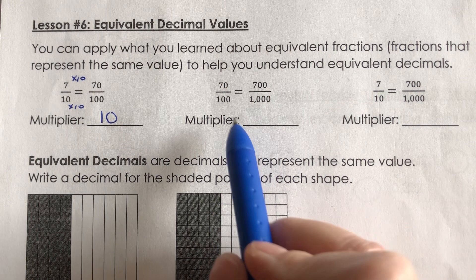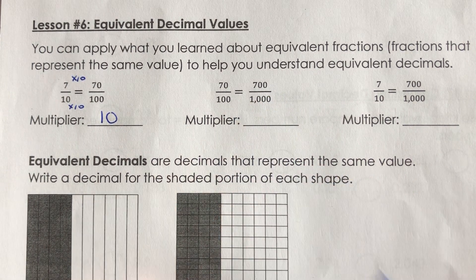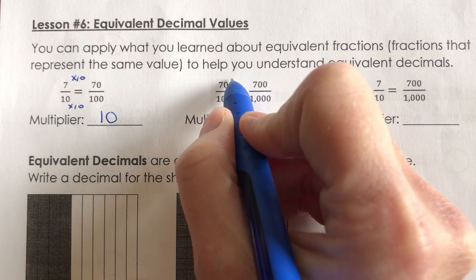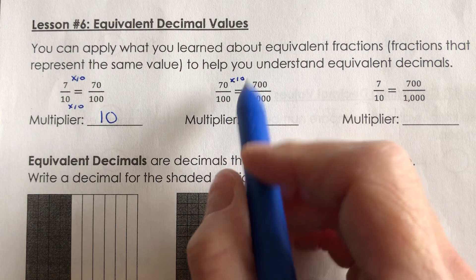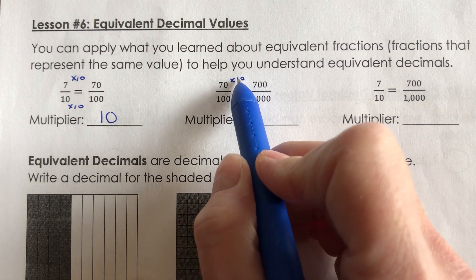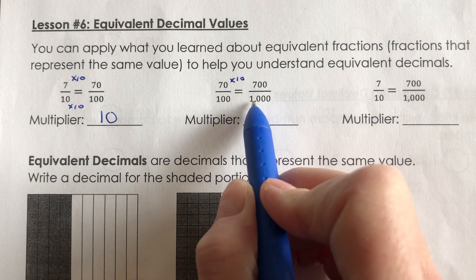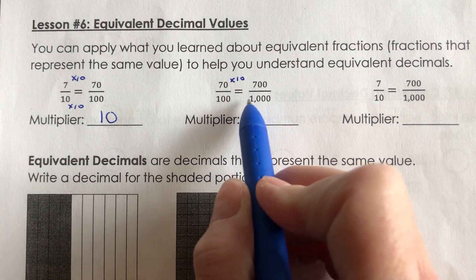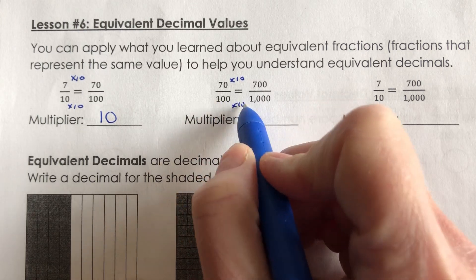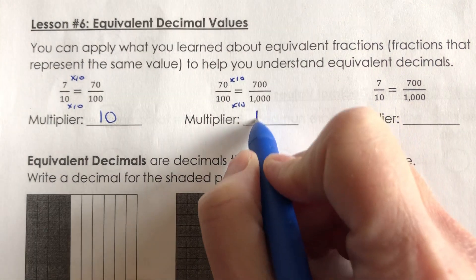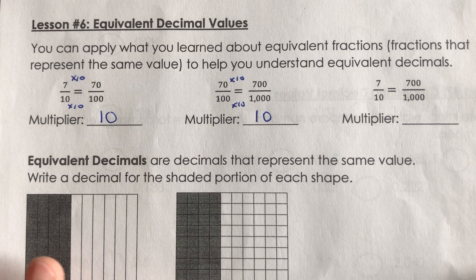For the second one, I have 70 over 100, which equals 700 over 1,000. If I multiply 70 by 10, I get 700. That pattern is 7 times 1 is 7 with two zeros. And we have 1, 2, 3 zeros in the denominator. So the multiplier here would also be 10. Those are equivalent because I can multiply the top and bottom by the same thing.